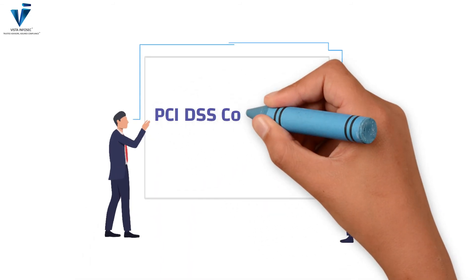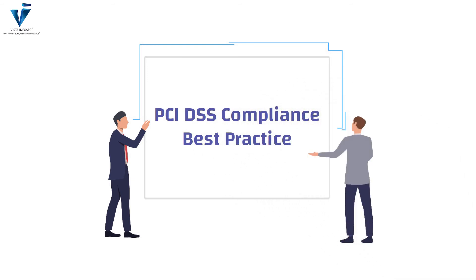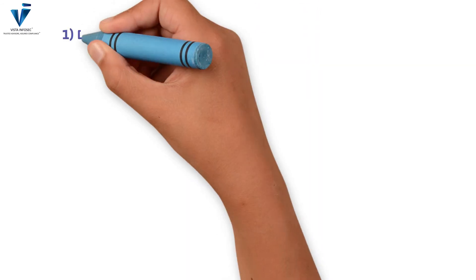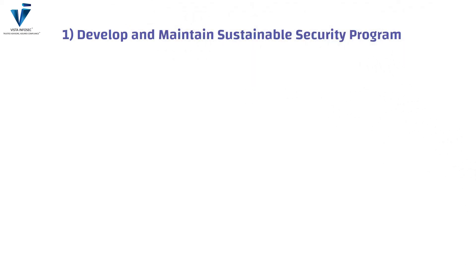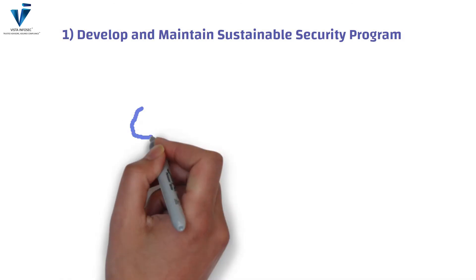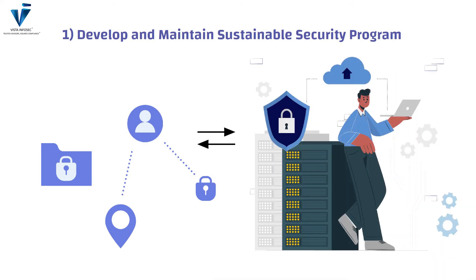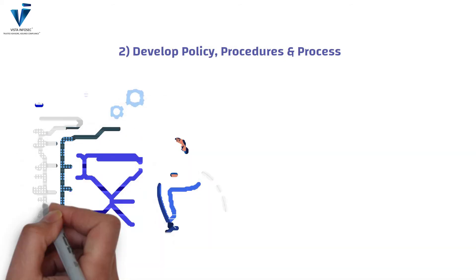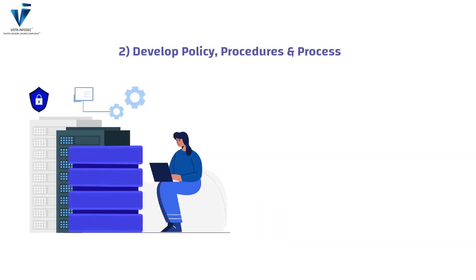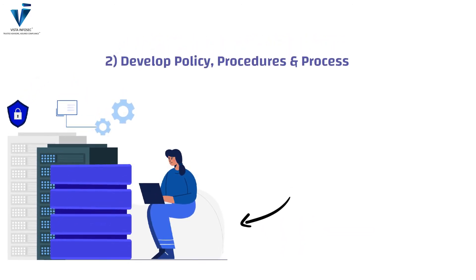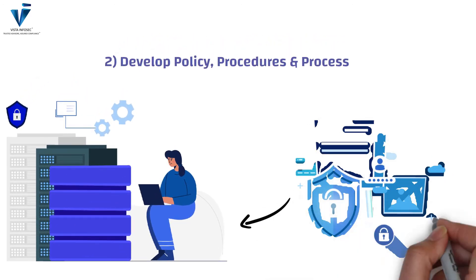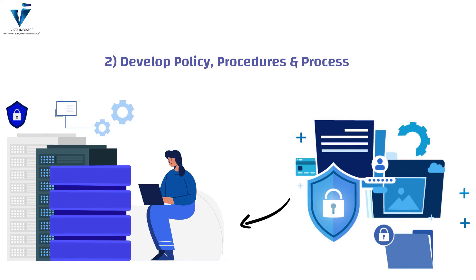Now moving on to the best PCI DSS compliance practices. The first best practice involves developing and maintaining a sustainable security program. Organizations must develop and maintain a strong security program that is effective and ensures continued compliance with the standards. Organizations must also develop policies, procedures, and processes with assigned responsibilities to ensure accountability within the organization, and to ensure continued compliance with applicable standards as required.